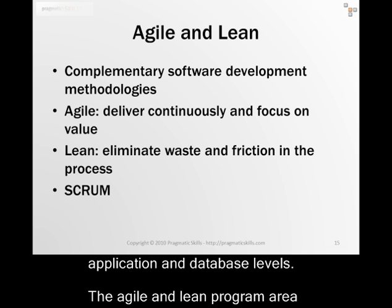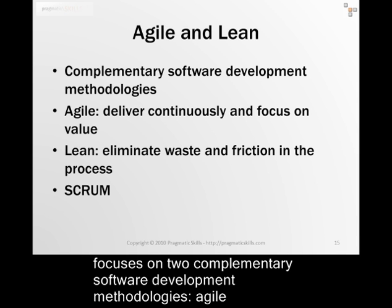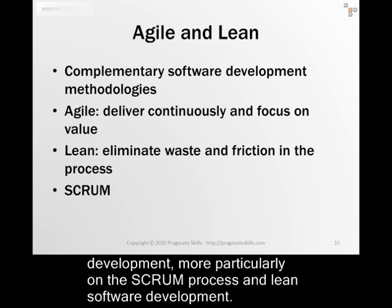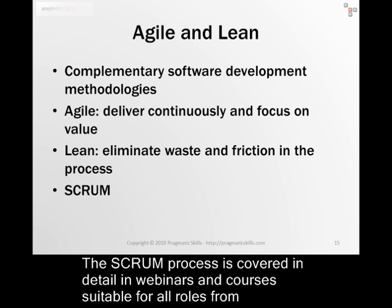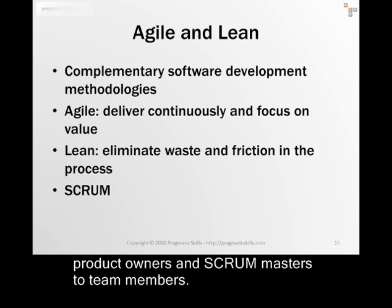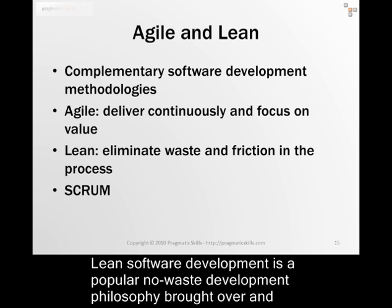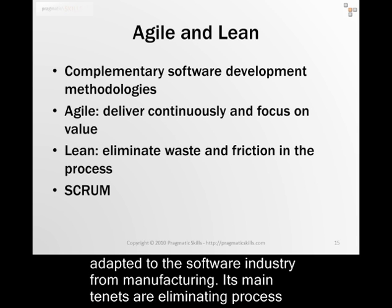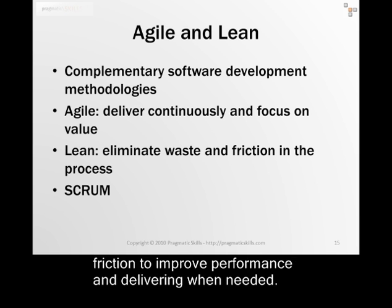The Agile and Lean program area focuses on two complementary software development methodologies: agile development, more particularly the Scrum process, and lean software development. The Scrum process is covered in detail in webinars and courses, and they are suitable for all roles, from product owners and Scrum masters to team members. Lean software development is a popular no-waste development philosophy that was brought over and adapted to the software industry from manufacturing.